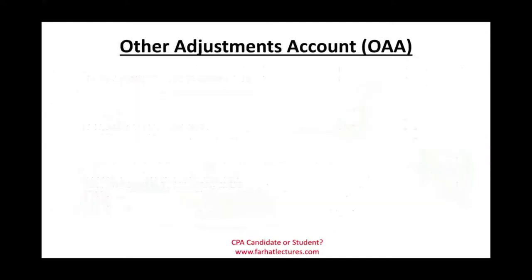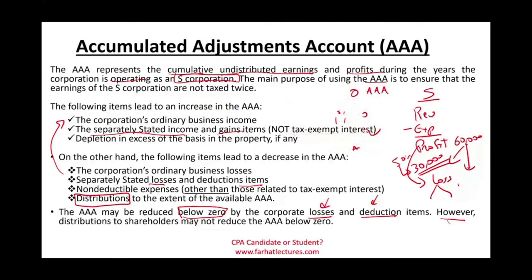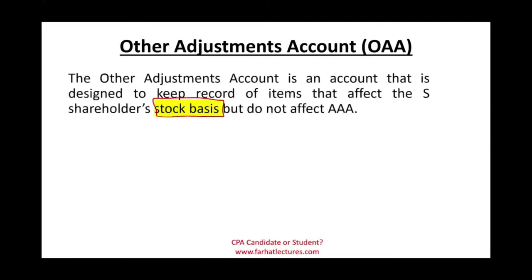The Other Adjustment Account, OAA, is designed to keep track of items that affect the shareholder's basis but not the AAA. Remember, we kept tax-exempt interest income out of AAA — even though it is income, it doesn't increase AAA. Tax-exempt interest expense doesn't affect AAA either. So where do we track it? We keep track of it separately in the OAA, because it affects your basis but not your AAA account.